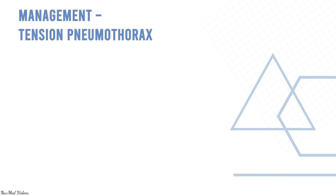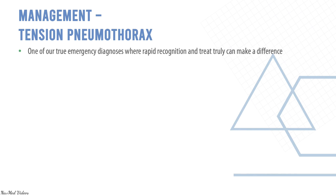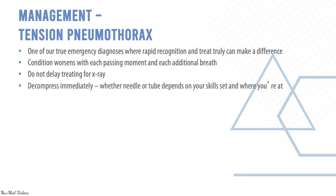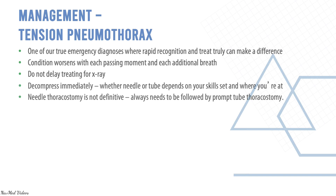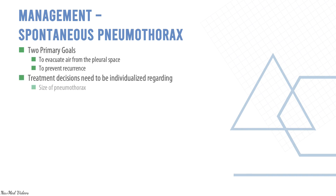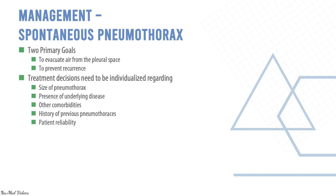Tension pneumothorax is a true emergency — rapid recognition and treatment can make a critical difference. Conditions worsen with each passing moment and each additional breath. Do not delay treating for an X-ray; decompress immediately with needle or tube depending on your skill set. Needle thoracostomy is not definitive and must be followed by tube thoracostomy. There are two primary goals: to remove air from the pleural space and to prevent recurrence. Treatment must be individualized based on size, presence of underlying disease, comorbidities, history of previous pneumothoraces, persistence of air leak, and patient reliability for follow-up.